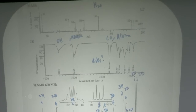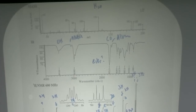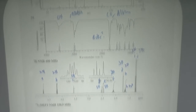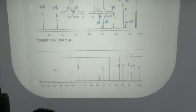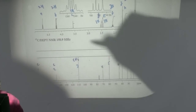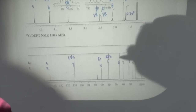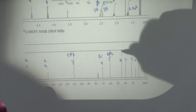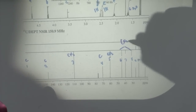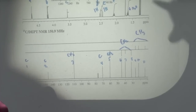Looking at the carbon NMR, peak number 1 is at about 173 ppm — where you'd expect for an ester, not where you'd expect for a ketone. Going through by DEPT: 1 is a quaternary, 2 is a quaternary, 3 is a CH2, 4 is a quaternary, 5 is a CH2, 6 is a CH2, 7 and 8 are CH2s, and 9, 10, and 11 are all CH3s.